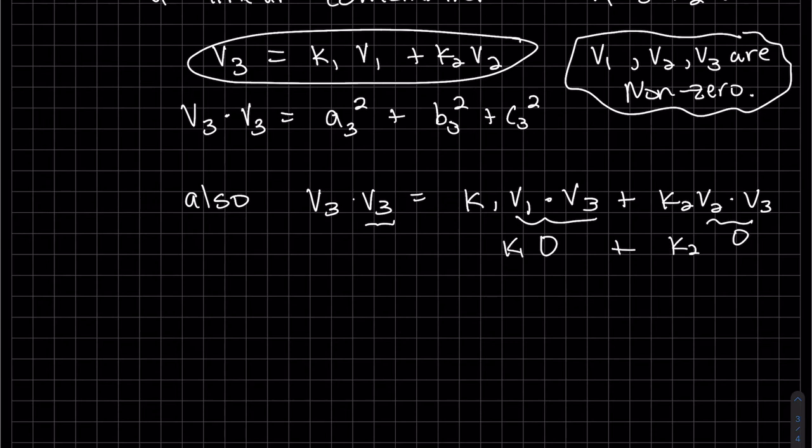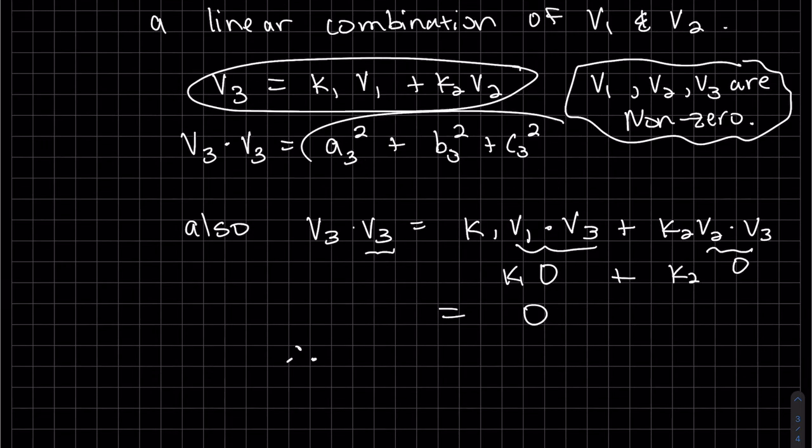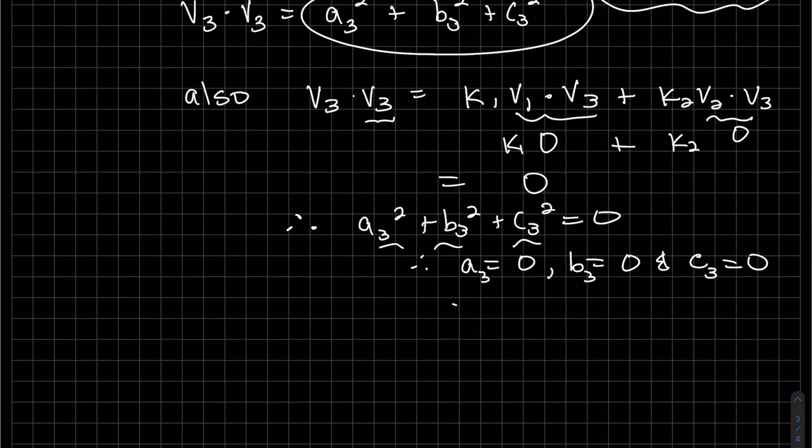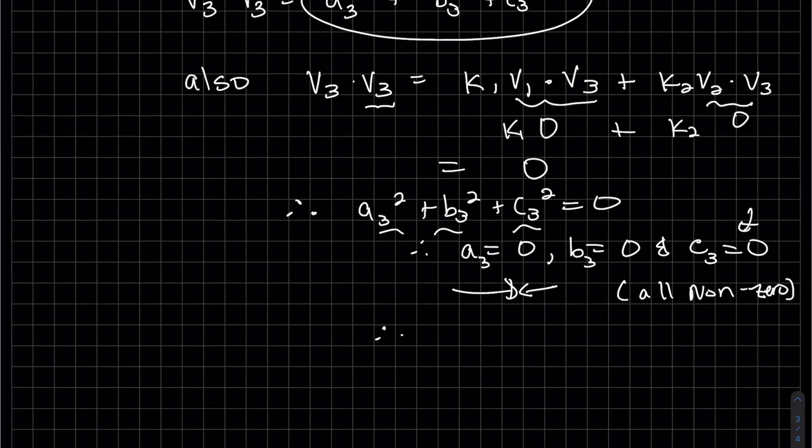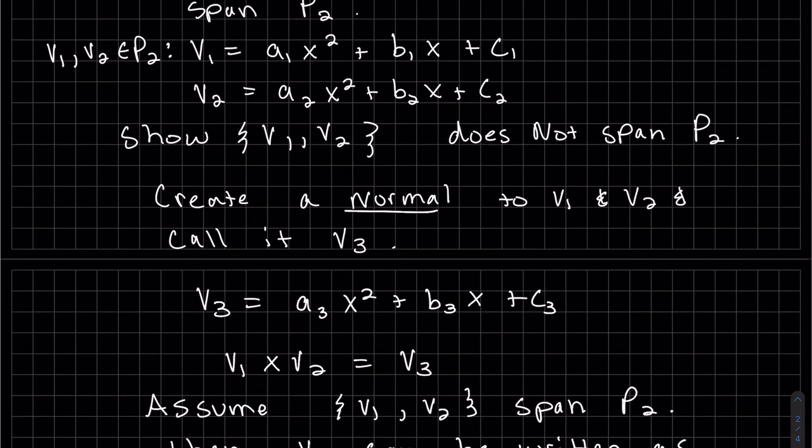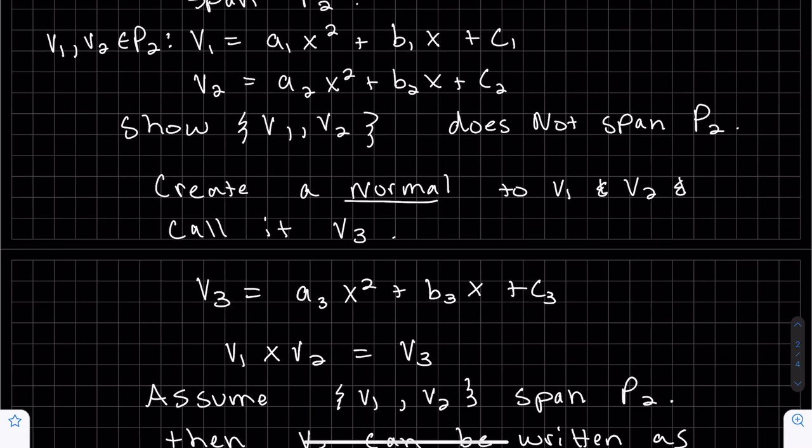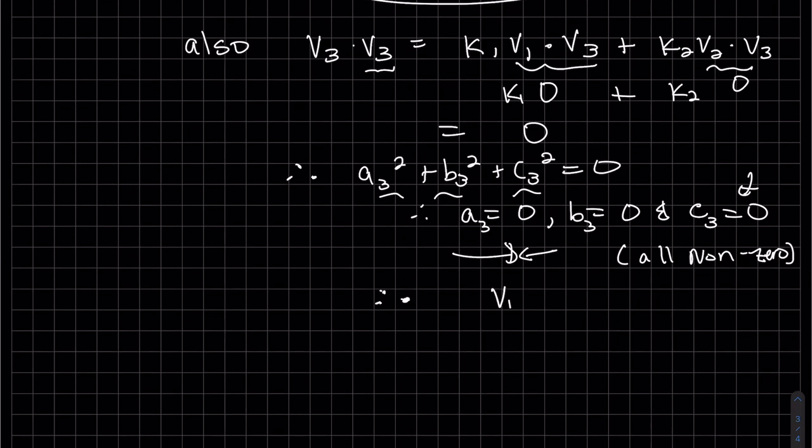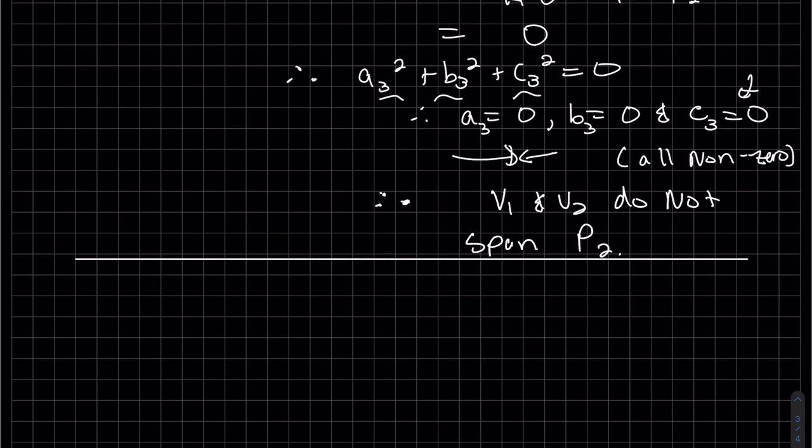Therefore, this must be zero, which—the only way this could be zero because they're all positive—which is a contradiction because they're all supposed to be non-zero. Since we have a contradiction to the fact that we assumed they do span, they don't span. Therefore, v1 and v2 do not span P2.